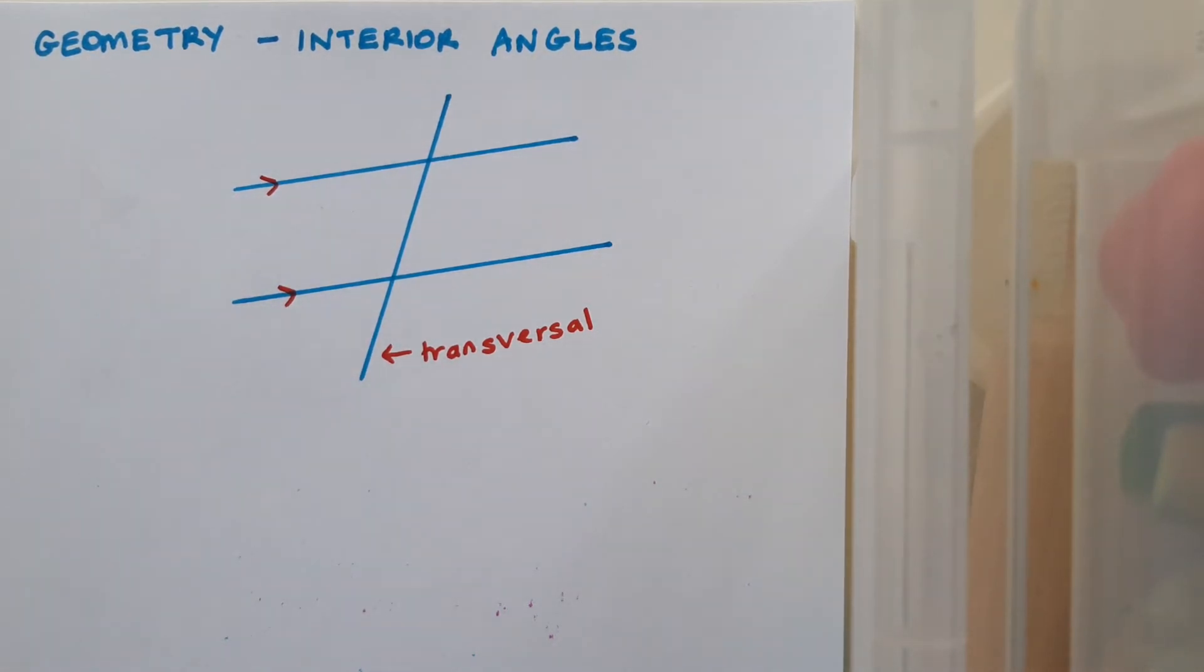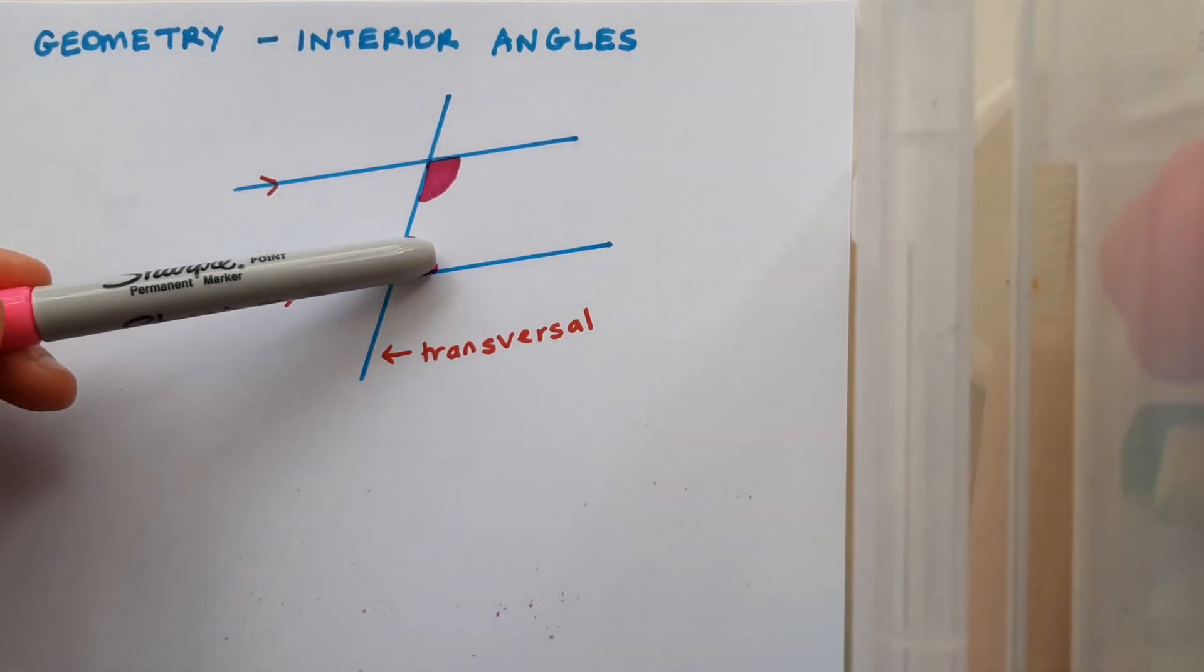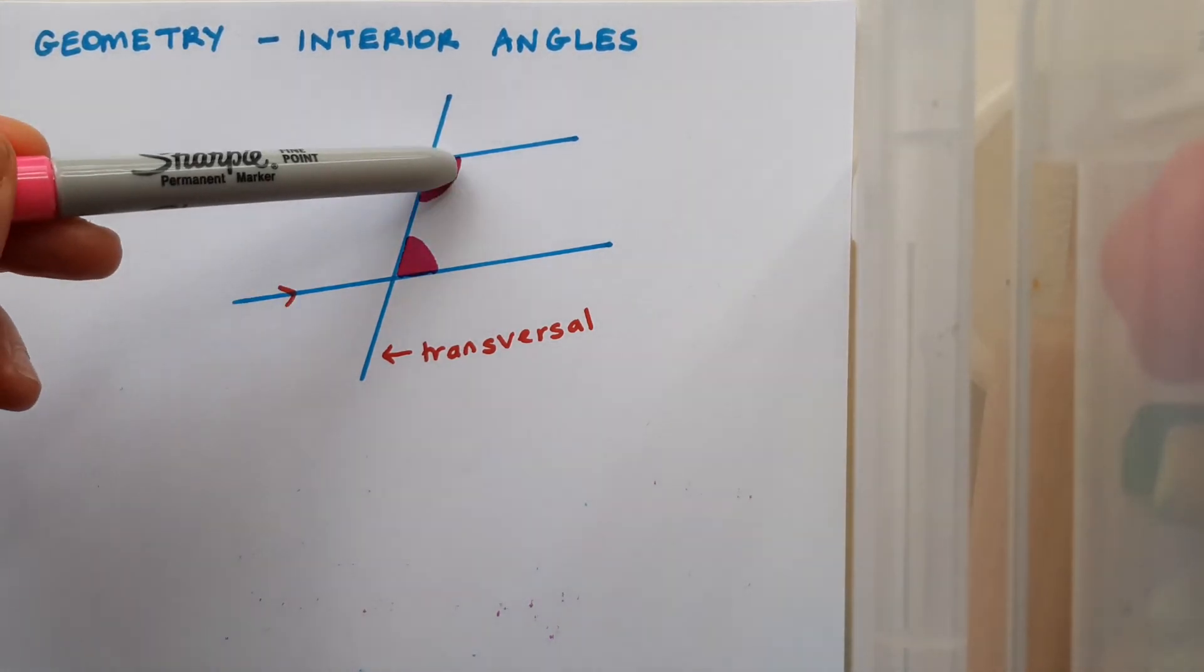But the transversal also creates interior angles. The angles that are shaded are an example of a pair of interior angles. On closer inspection we can see that the interior angles are not equal. You can see this one for example is acute while this one is obtuse.